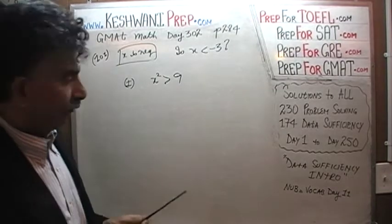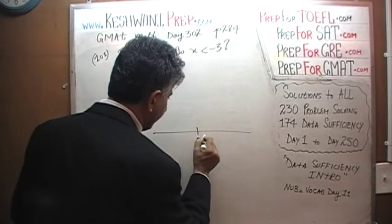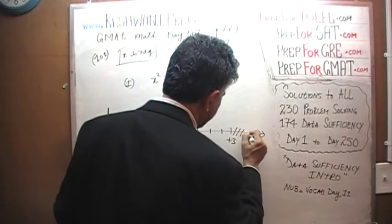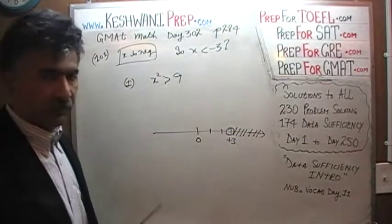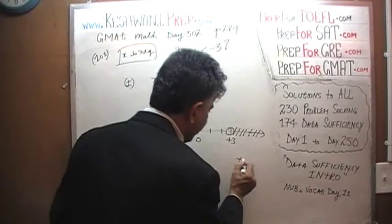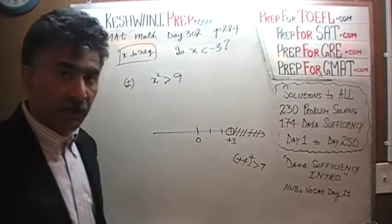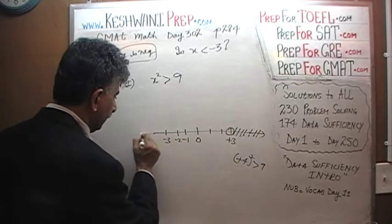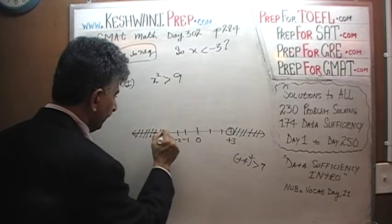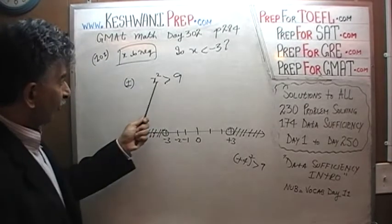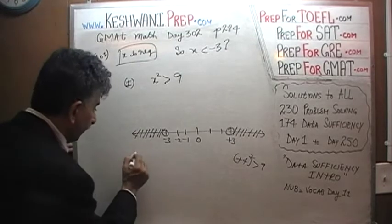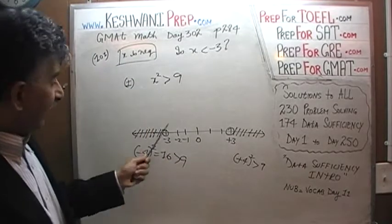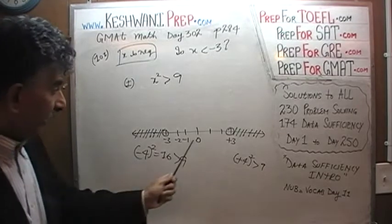It will happen in two places. Here is 0, 1, 2, 3 — positive 3. If X happens to be anything more than 3, not including 3 — for example, if X is positive 4, then positive 4 squared is obviously more than 9. But also, if X happens to be less than negative 3 — negative 1, negative 2, negative 3 — if X is less than negative 3, not including negative 3, then X squared will again be more than 9. For example, the square of negative 4 is 16, which is more than 9. So this statement tells us that X is either below negative 3 or above positive 3.